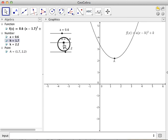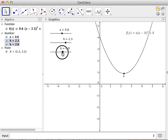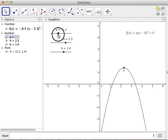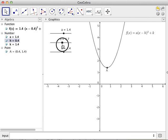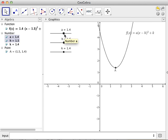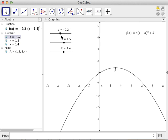If you move the graph, the vertex remains the lowest point if a is positive and remains the highest part of the graph if a is negative.